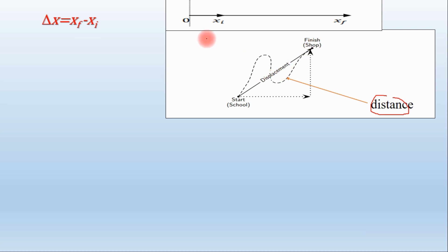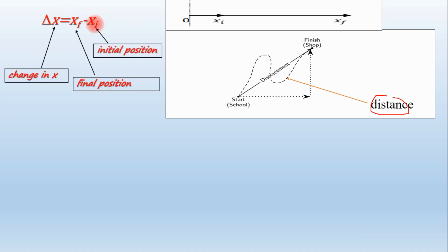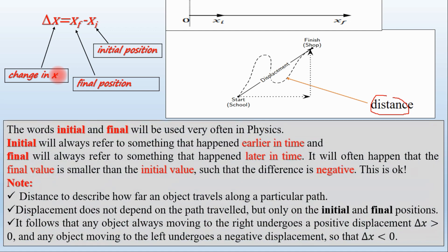The displacement is equal to final position minus initial position. The words 'initial' and 'final' will be used very often in physics — 'initial' and 'final' always refer to something that happened earlier or later in time.